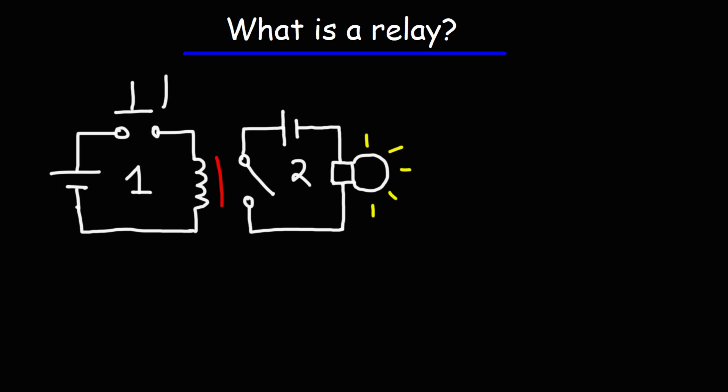So if we push down this switch, this is going to create a closed circuit which will allow current to flow. As current flows through this electromagnet, which is basically a coil of wire around a metal, once this electromagnet is energized, it's going to cause this switch to close. When that switch closes, current will flow, turning on the light bulb.